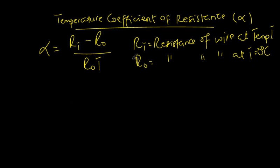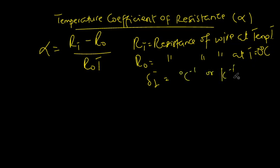The temperature coefficient alpha has SI units of degrees Celsius inverse or Kelvin inverse. Depending on the unit given in the question, you can either maintain it as degrees Celsius inverse or Kelvin inverse.